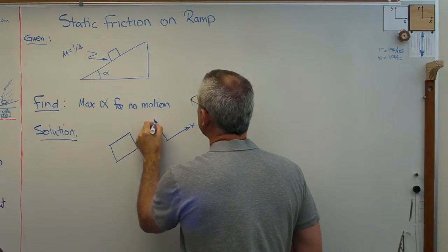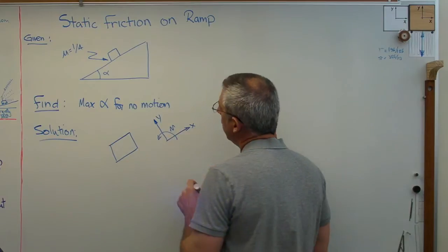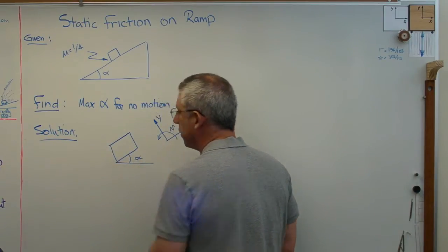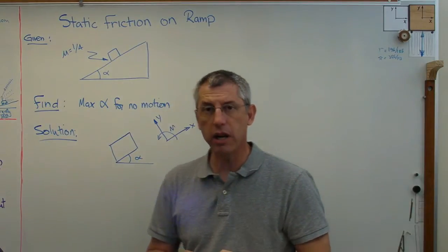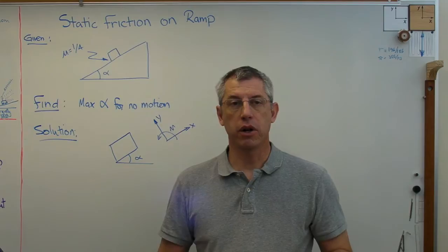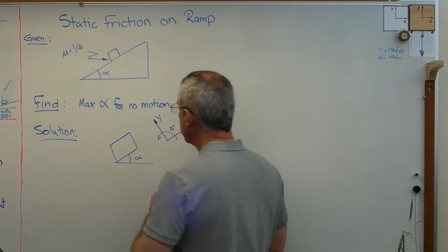The problem's going to be easier if I go ahead and align my coordinate system with the box. So here's my positive sign convention here, and that angle there is alpha, whatever alpha is, that's it. Okay, now let's start talking about the forces that are exerted on the box.